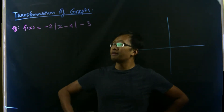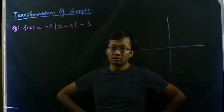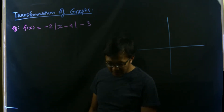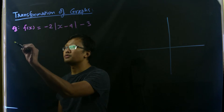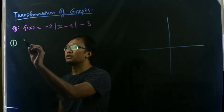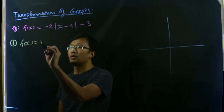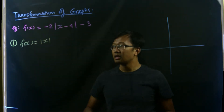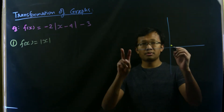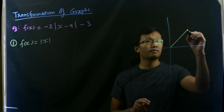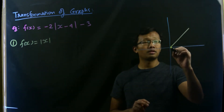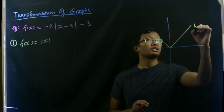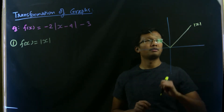We now have an absolute value function. The parent function is the absolute value function, so f(x) equals absolute value of x. Its graph is simply a V-shaped curve. This is the absolute value function.